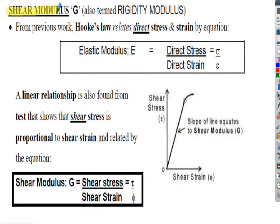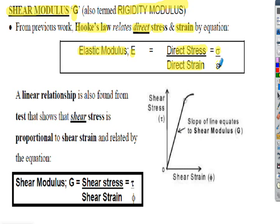The final piece of the jigsaw we need to analyse problems related to shear stress and strain is the link between shear stress and shear strain — that's the rigidity modulus, symbol G in most textbooks. This is analogous to what we looked at in the previous presentation on direct stresses and strains. From Hooke's law, we defined a direct relationship between stress and strain — they were proportional to each other. Similarly, there is still a linear relationship between shear stress and shear strain.